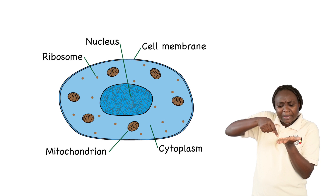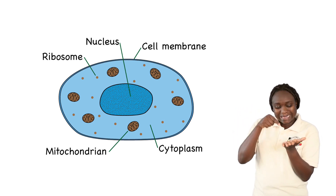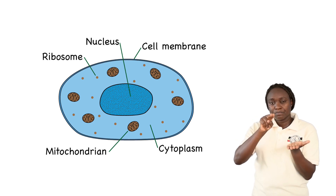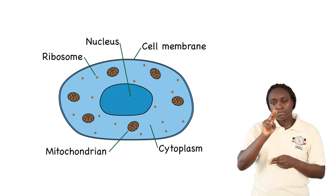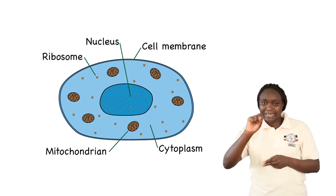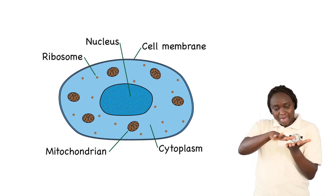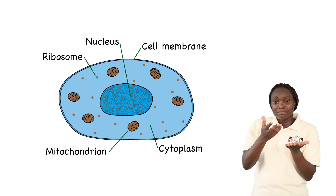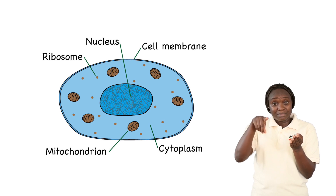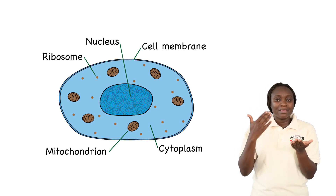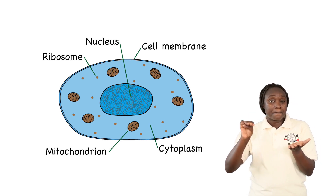And in the middle, at the center of the cell, is a part that we call the nucleus. Can we say it together? Nucleus. So an animal cell has three main parts. Part one is the cytoplasm. The thin outer part is the cell membrane. And then the inner part is the nucleus.